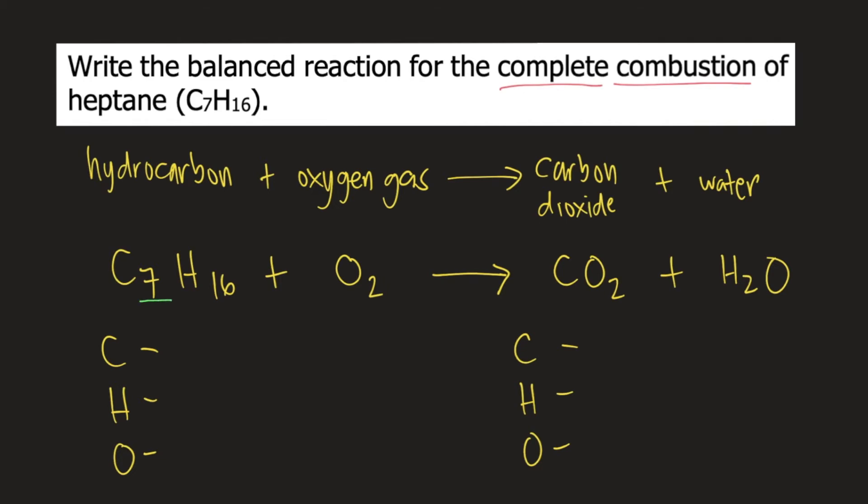On the left side, we have seven carbons. On the right side, we have one carbon. So how do we balance carbon? We put the coefficient 7 on carbon dioxide. That's 7 times 1, which equals 7. Therefore, carbon is already balanced.